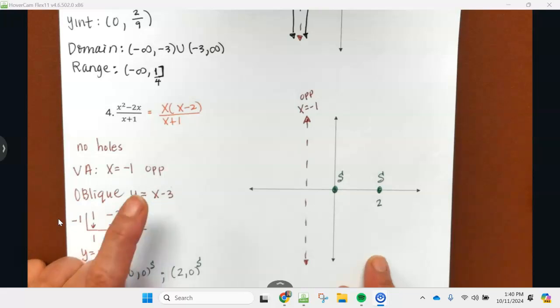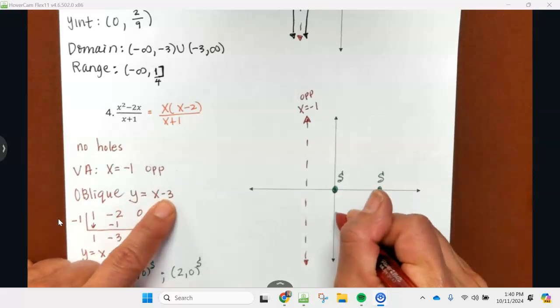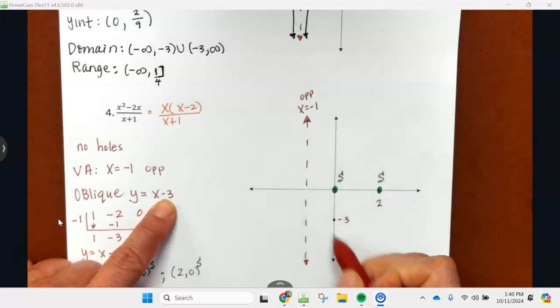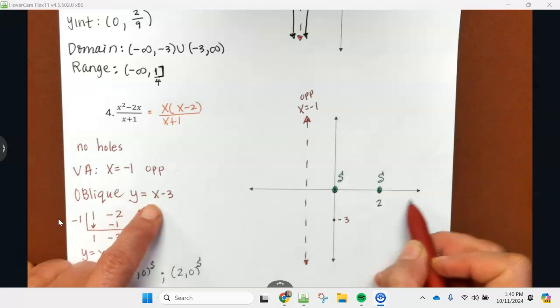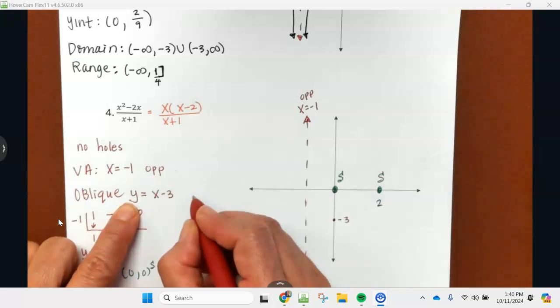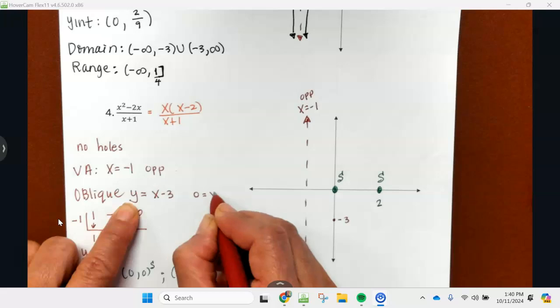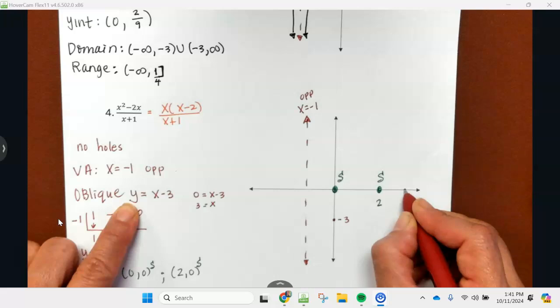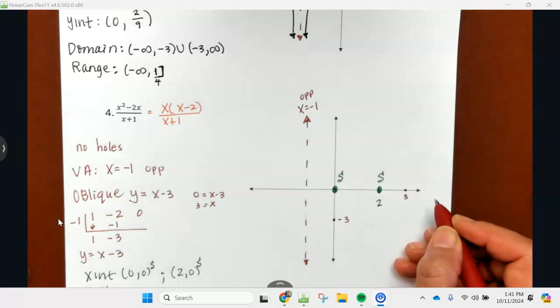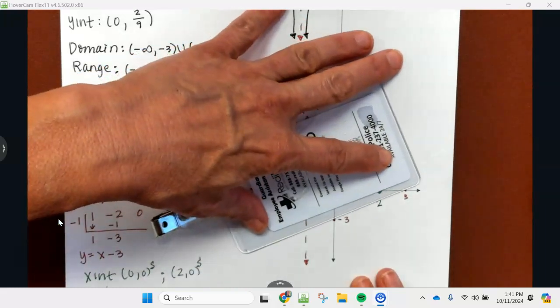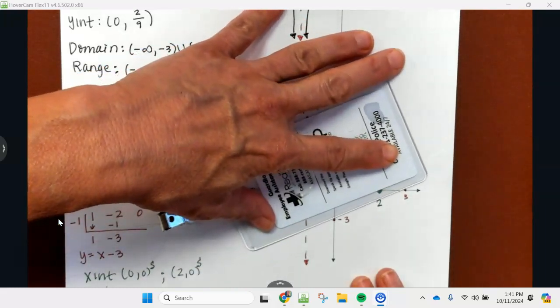This is x minus three, so my y-intercept, let's just say negative three is here, and remember it's up one over one, up one over one. If you want to see where it crosses the x-axis, not a bad idea. Remember where it crosses the x-axis, y is zero, so it crosses the x-axis at three. I'm going to say three is here. This is why your ruler is so important. Go ahead and line those up and draw a dashed line.